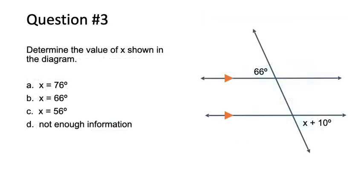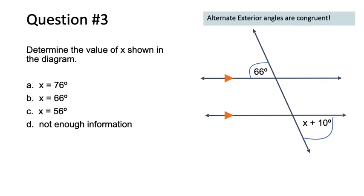A traditional diagram: a pair of parallel lines and a transversal as shown — determine the value of x, where x is part of an algebraic expression. The angles are outside of the parallel lines and on alternating sides of the transversal, so these are alternate exterior angles. Since they are congruent, we set the expressions equal: x plus 10 equals 66. Subtracting 10 from both sides gives x equals 56 degrees.